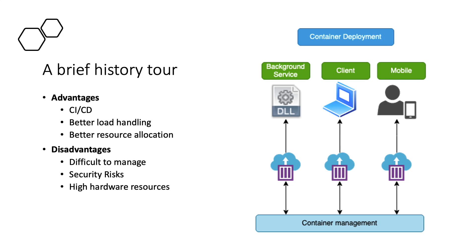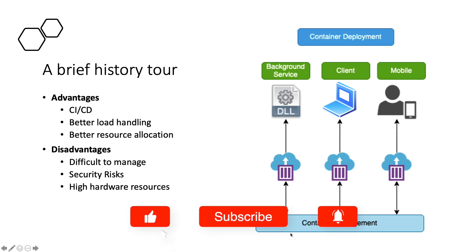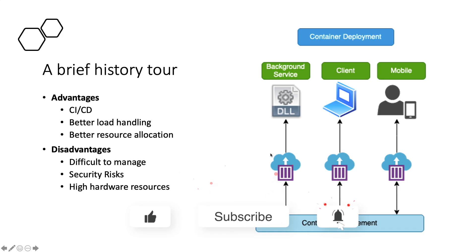Containers also provide better load handling. If a single container has a lot of traffic, we don't need to increase resources for all containers — the container automatically communicates with the container management, which communicates with the OS kernel, and resources are automatically allocated to that container. If the load increases further, different containers get initialized automatically to handle the influx. For example, instead of one container, five containers can be initiated and automatically handle the incoming requests. These are the main benefits of container deployment.